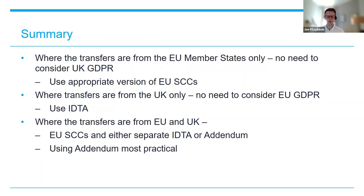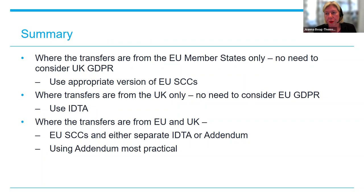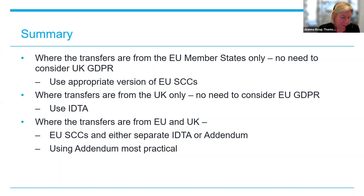To recap: if it's from EU member states, use the EU SCCs — no addendum required. If it's UK only, use the IDTA. Where transfers are from both the EU and UK to somewhere else, either use the EU SCCs with the addendum, or use the separate IDTA. The addendum is fairly practical, and that is generally what we will see where the transfers are from both the EU and the UK — so the EU SCCs with the UK addendum.